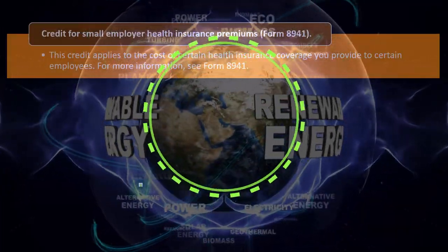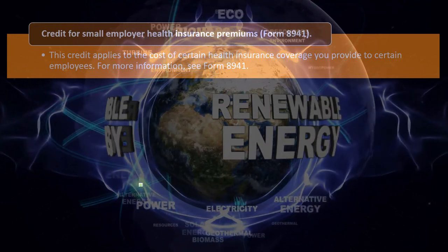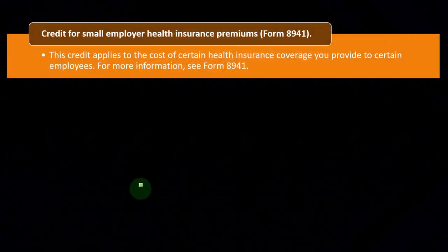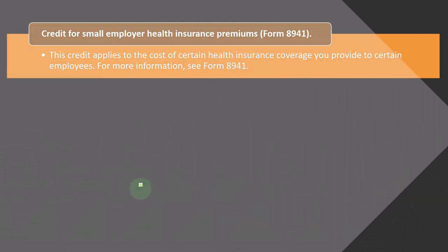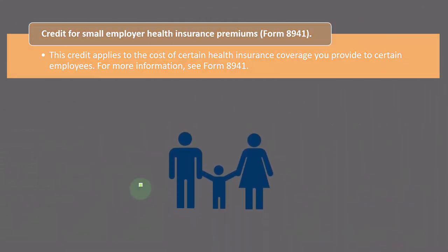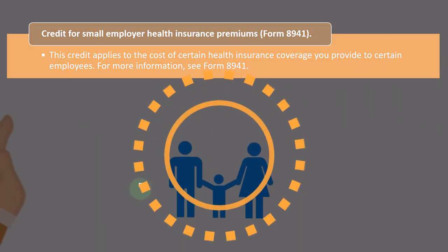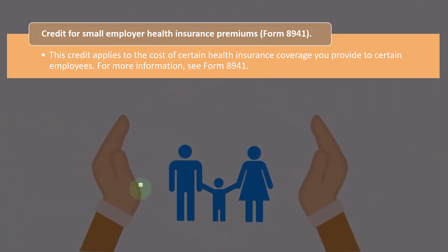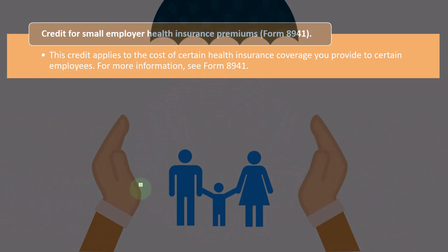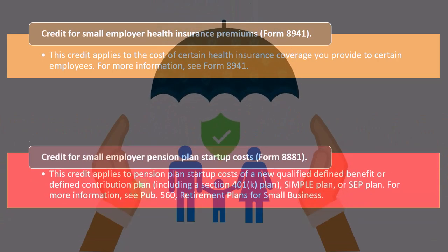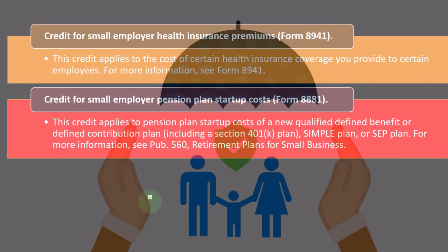The Credit for Small Employer Health Insurance Premiums is on Form 8941. This credit applies to the cost of certain health insurance coverage you provide to certain employees. For more information, see Form 8941.